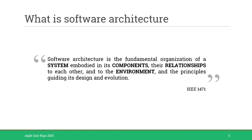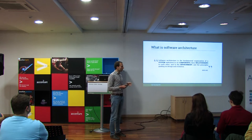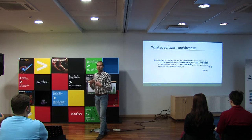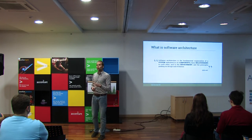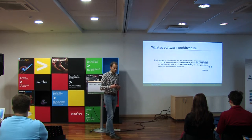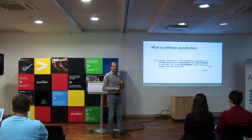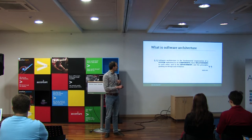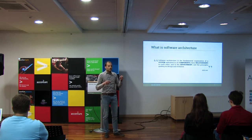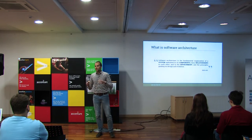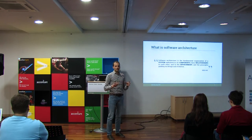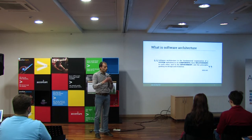Before we continue, let's define software architecture. Every one of you has a definition in mind, and you can find more than 100 definitions on Google. The term is a bit vague and people make their own interpretations. I really like the IEEE standard definition because it gives us four main elements: a system, components within that system, relationships between those components, and the surrounding environment. These four elements — the system, the components, the relationships, and the surrounding environment — describe how we communicate and define our architecture.